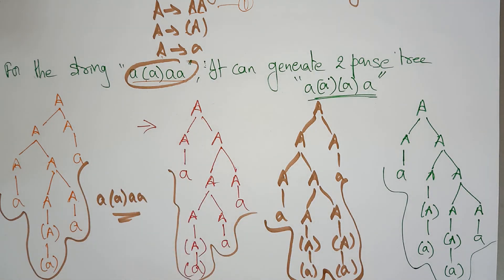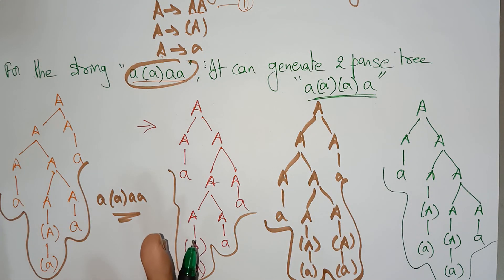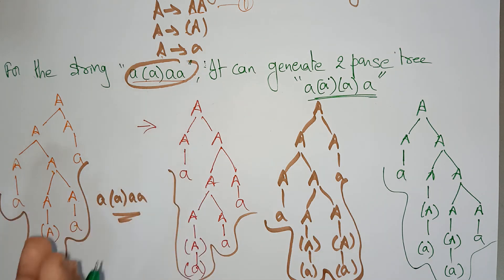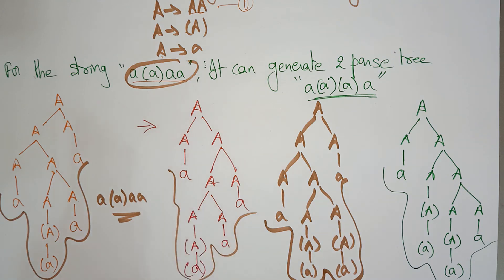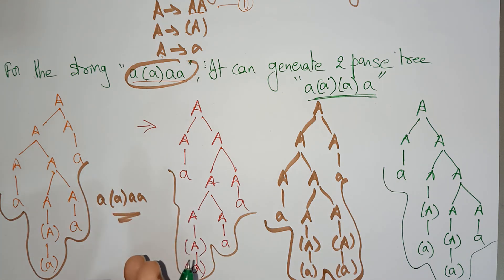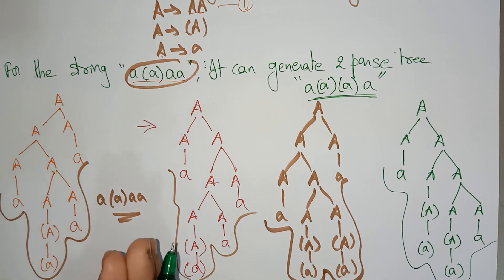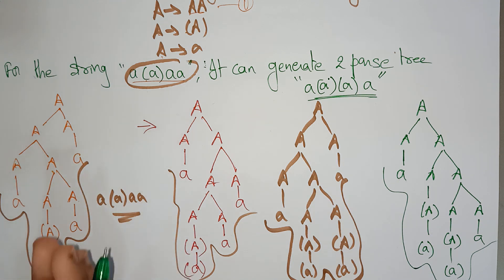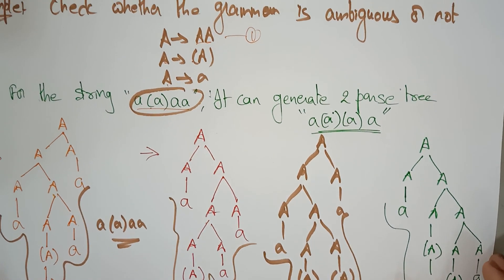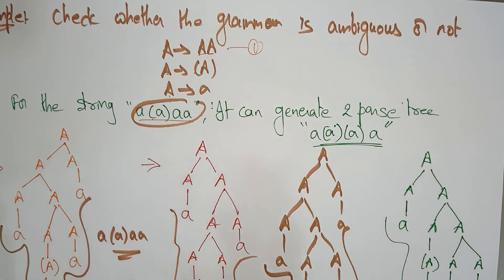Whatever string derives from this context-free grammar can be represented in a parse tree. The grammar that shows different types of parse trees for the same string is an ambiguous grammar. So whatever string you take for the given productions, this grammar generates two parse trees. I hope you understand clearly what an ambiguous grammar is. Thank you.